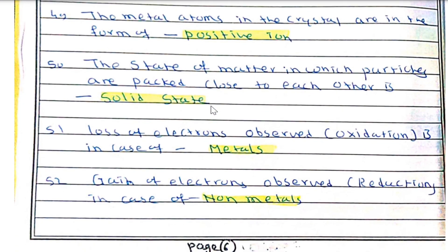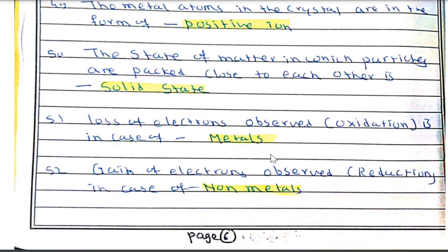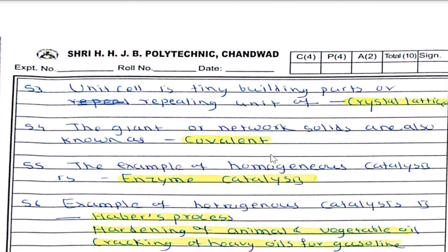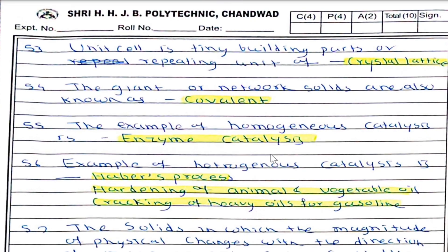The state of matter in which particles are packed close to each other is known as the solid state. Among solid, liquid, and gaseous states, particles are closest in the solid state. Loss of electrons means oxidation, which is observed in metals. Gain of electrons is observed in non-metals. A unit cell is the tiny building block or repeating unit of a crystal lattice.